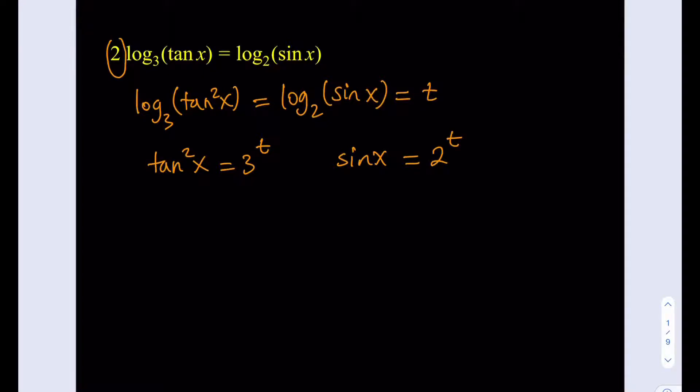Okay, now I can write tangent squared as sin squared over cosine squared, which can be written as sin squared over 1 minus sin squared. Okay, this is good because now I can replace sin x with 2 to the power t. So that's going to give me 2 to the power t squared, which is 4 to the power t, divided by 1 minus 4 to the power t.